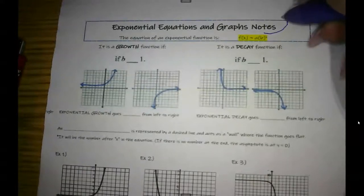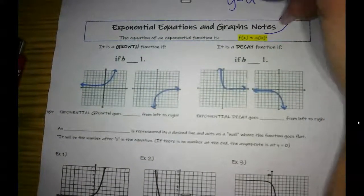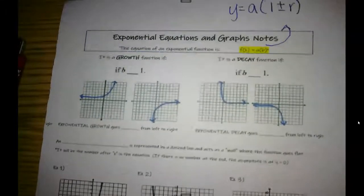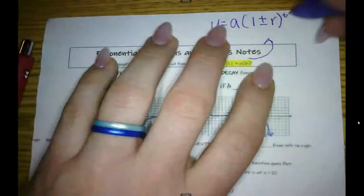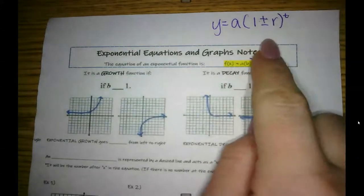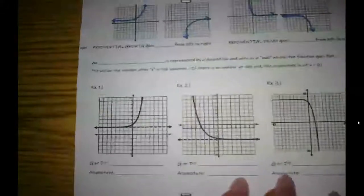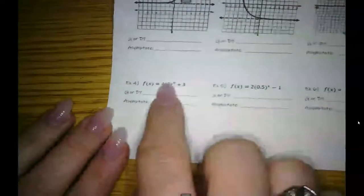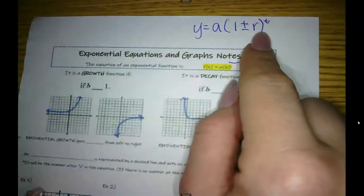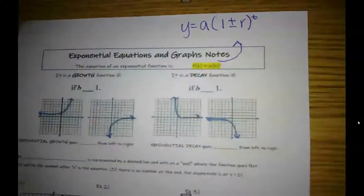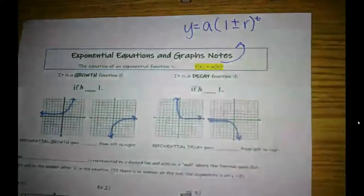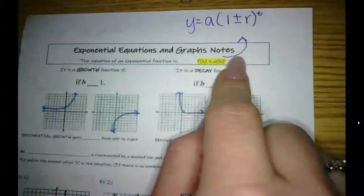And this is what we were talking about before. It really is y equals a, open parentheses, one plus or minus r, close parentheses. Oh, you can't see that. With t is our exponent. My handwriting is awful this morning. They just normally, whenever we see them written out, they just go ahead and do one plus whatever the rate is. And then our t generally is what's going to be our variable, which is our x. So you'll see that. So that's all that that is. It's the same equation.